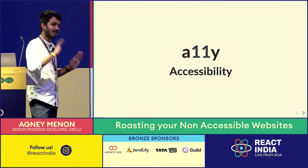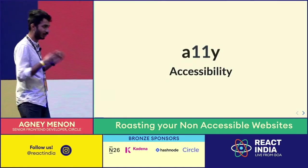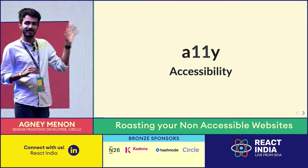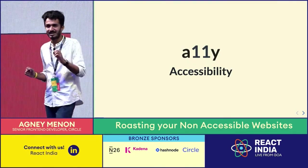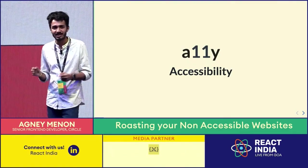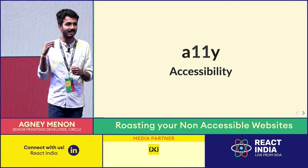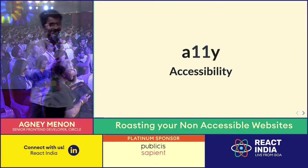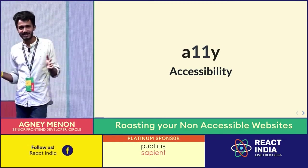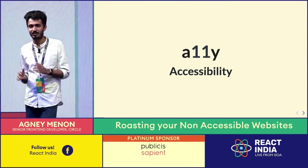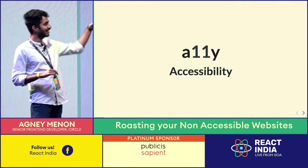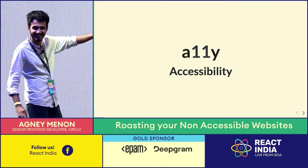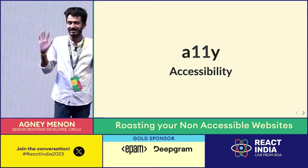So accessibility is a tough word to say. Like I've been saying it over and over. You can try it right now — this is a very tough word to repeat. So it's also abbreviated as A11Y. Can I have a show of hands who here knows why it is called A11Y? It's called A11Y because there are 11 letters between A and Y. That's it. There are 11 letters between A and Y, it's called A11Y.